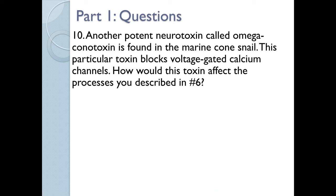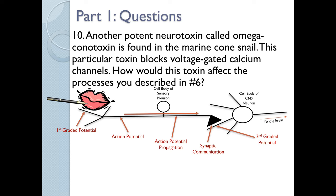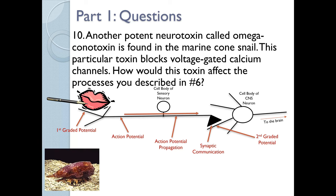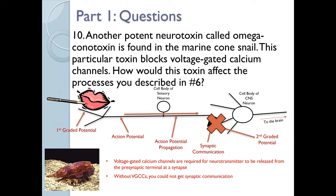Question ten: another potent neurotoxin called omega-conotoxin is found in the marine cone snail. This toxin blocks voltage-gated calcium channels. Voltage-gated calcium channels are required for the neurotransmitter to be released from the presynaptic terminal at a synapse. The voltage-gated calcium channel must open to allow calcium in, which allows neurotransmitter to be exocytosed into the synaptic cleft. Without voltage-gated calcium channels, you could not get synaptic communication. The next neuron in line could never get a signal, could never produce a graded potential, and could never generate an action potential.